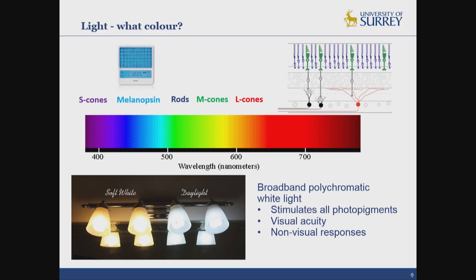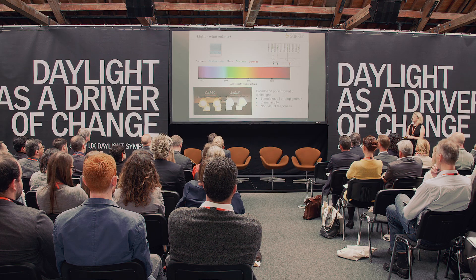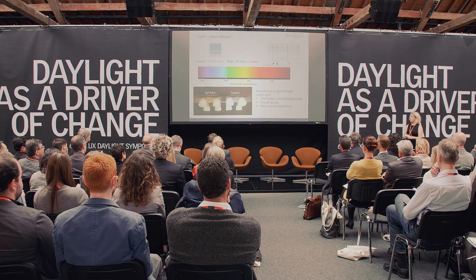What type of light is best? In our eye we have our three-cone system, which is responsible for our colour vision, and we also have our rods, which help us see under dim light. About 15 years ago, it was discovered that in our eye there is a third photoreceptor called melanopsin, which is most sensitive to blue light around 480 nanometres. It is this photopigment that provides the primary information for these non-visual effects.